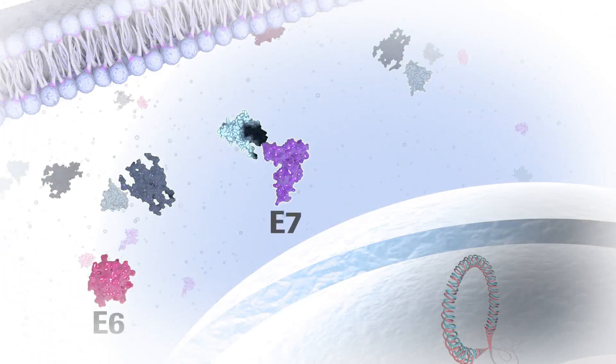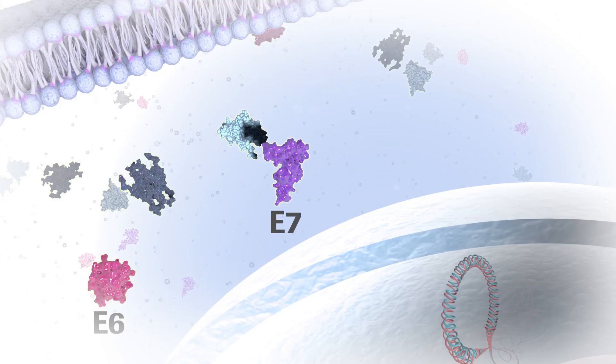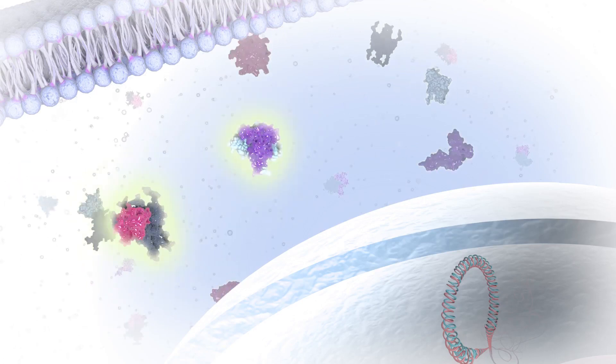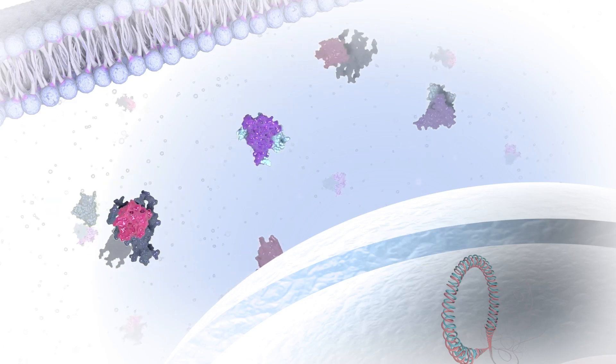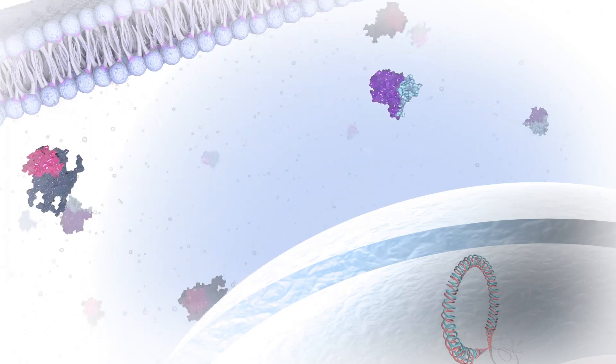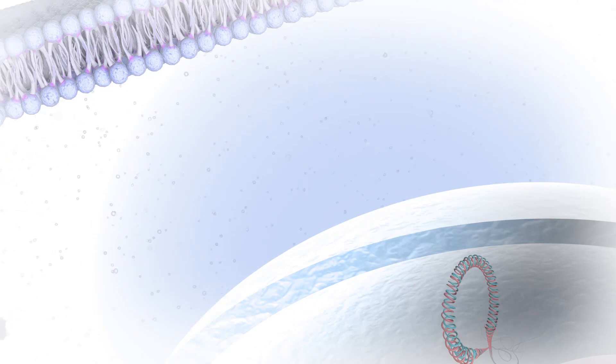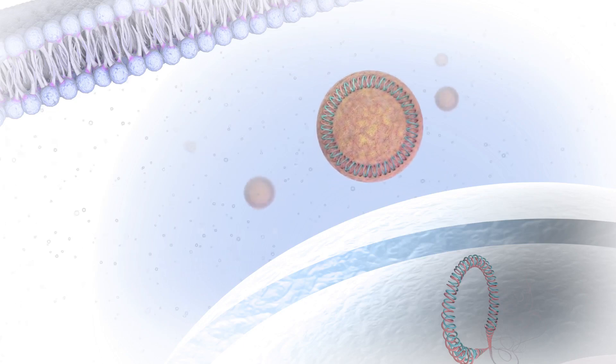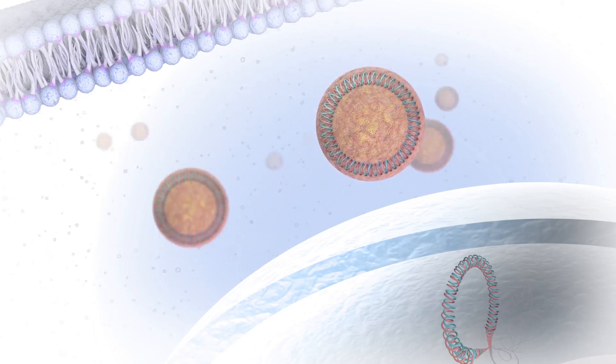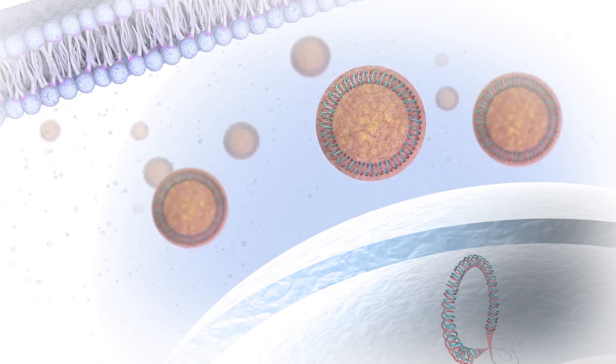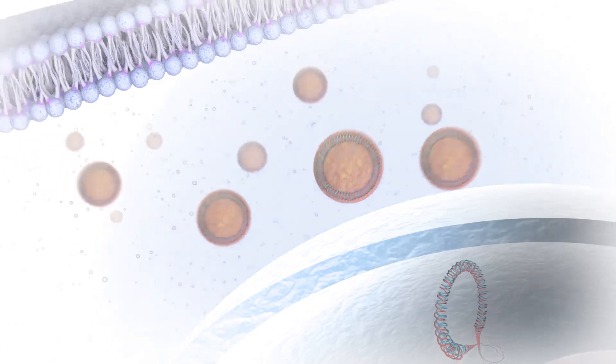Upon E6 and E7 expression, the proteins that are encoded by the mRNA sequences interact with P53 and PRB respectively. This is what results in the unscheduled cell replication and division. As these infected cells are forced to replicate, viral episomes are also replicated, producing more viral particles.